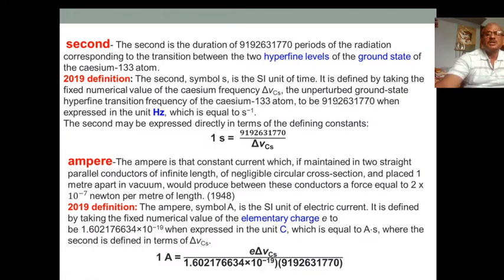Ampere. The ampere is that constant current, if maintained in two straight parallel conductors of infinite length and placed one meter apart in vacuum, would produce between these conductors a force equal to 2 × 10^-7 newton per meter of length.